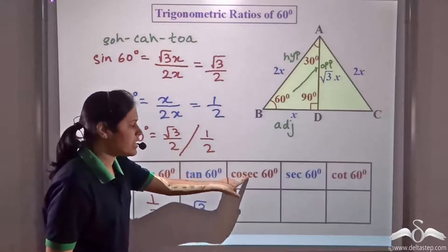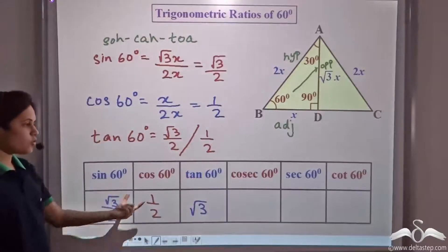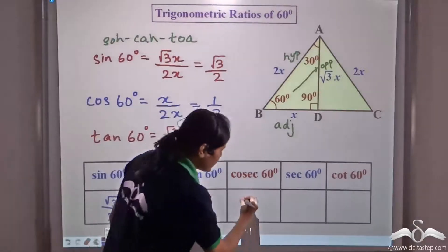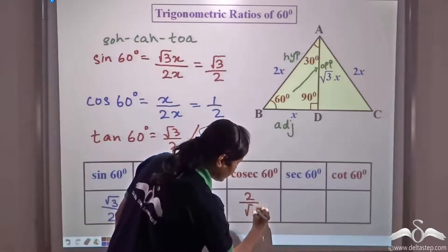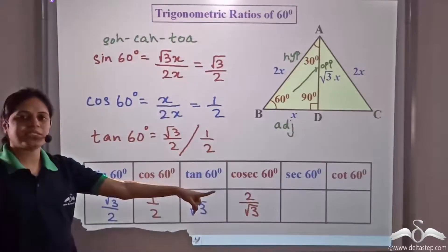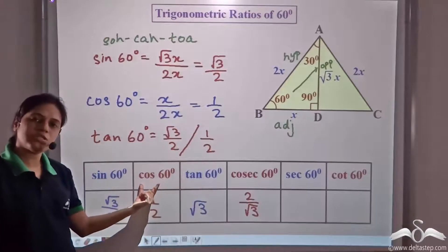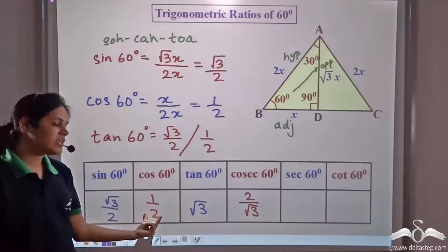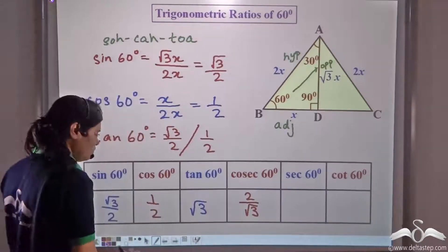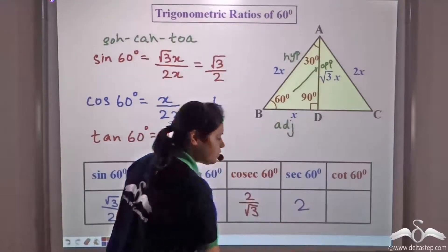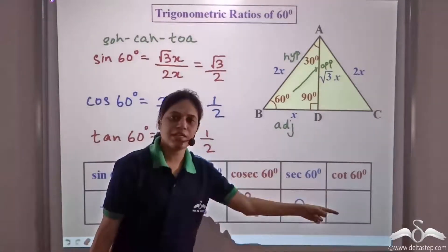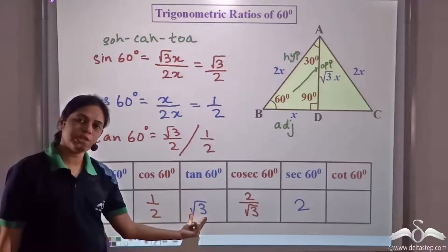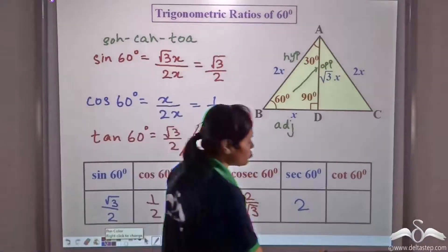Cosec 60 is the reciprocal of sin 60, which is 2/√3. Sec 60 is the reciprocal of cos 60, which is the reciprocal of 1/2, equal to 2. Cot 60 is the reciprocal of tan 60, which is the reciprocal of √3, equal to 1/√3.